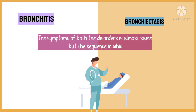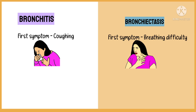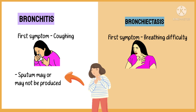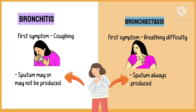The symptoms of both disorders are almost the same, but the sequence in which they occur is different. Coughing is usually the first symptom of bronchitis, while bronchiectasis may start with slight difficulty in breathing. Sputum may or may not be produced in bronchitis, but in bronchiectasis it is always present and sometimes may also contain pus.